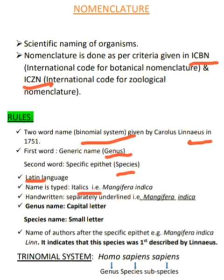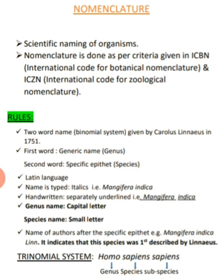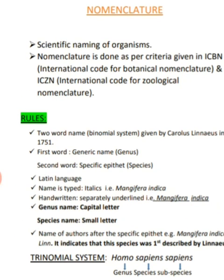If the name is handwritten, it should be underlined separately. For example, for Mangifera indica — which is the scientific name of mango — if the name is typed, it is written in italics, and if it is handwritten, it should be separately underlined.